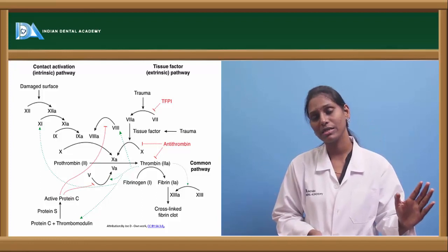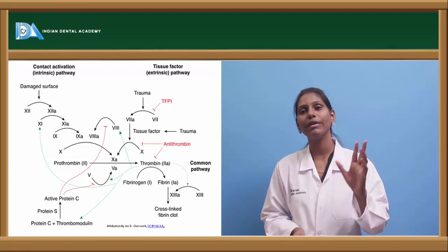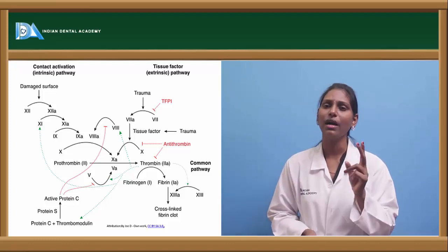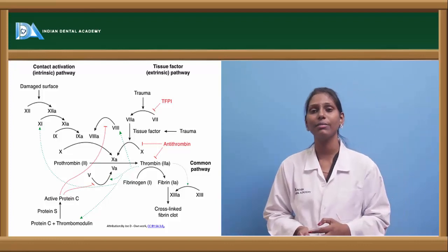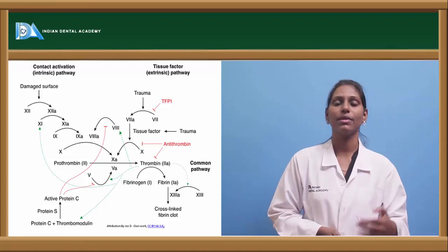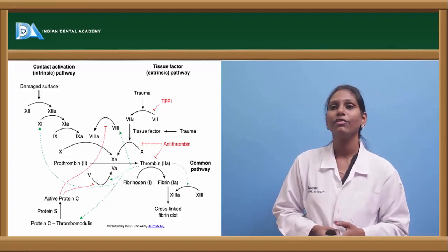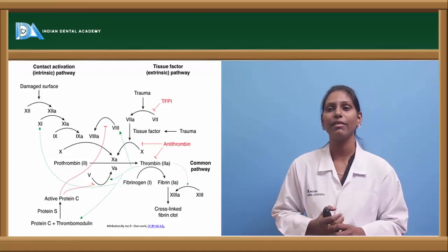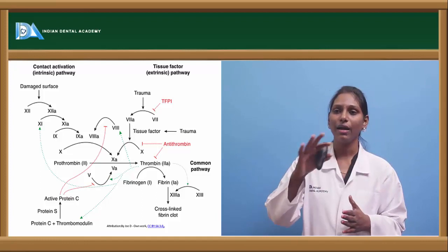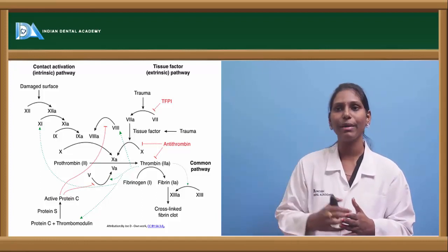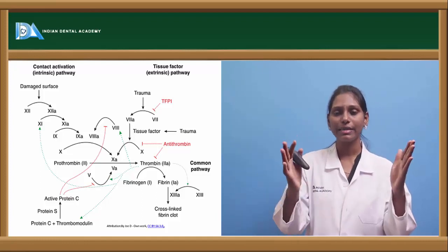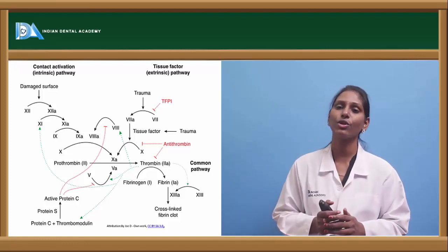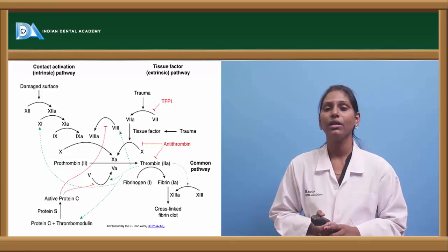To support natural hemostasis, there is a coagulation cascade. The earlier model was the waterfall mechanism; the current model is cell-based theory. It involves contact activation (intrinsic pathway) and tissue factor activation (extrinsic pathway), which converge into a common pathway, ultimately forming fibrin strands and securing the platelet plug.